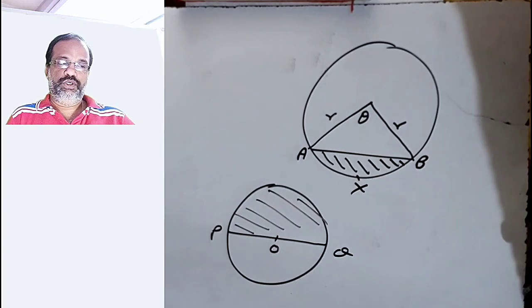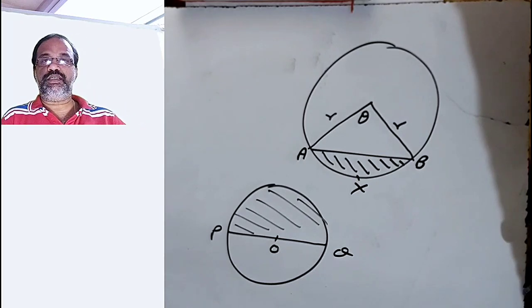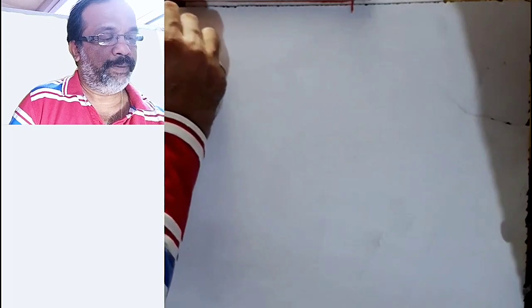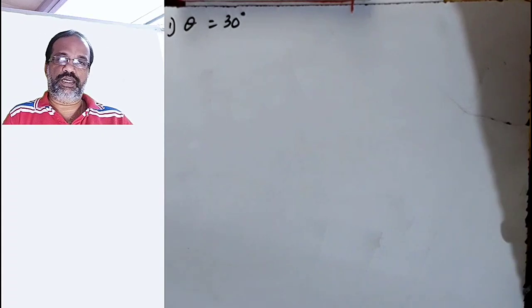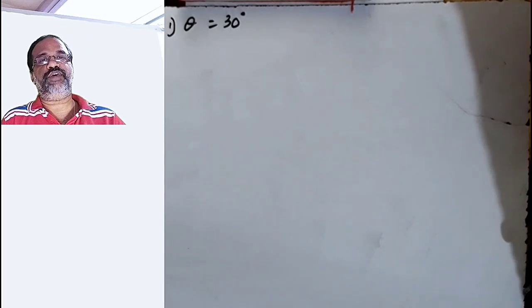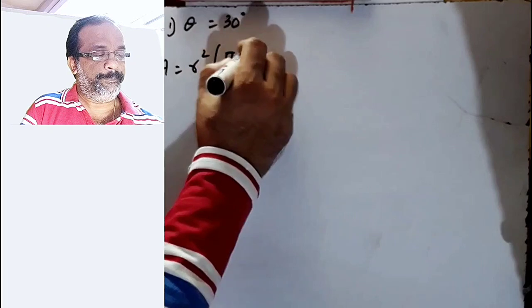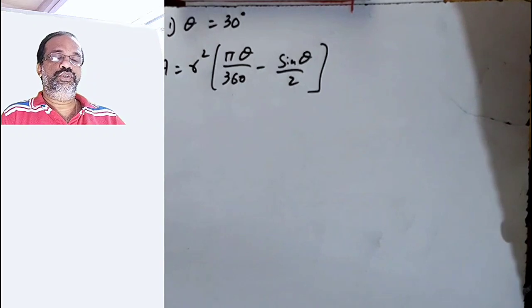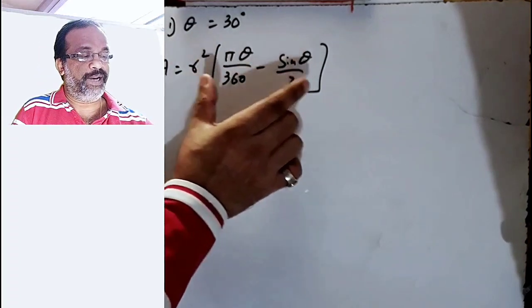Before we start Exercise 7.4, we will practice the bracket part of the area of segment formula. The formula for area of segment is r² times the bracket (π·θ/360 − sin θ/2). So let us practice how to solve that bracket part for the four standard angle values.